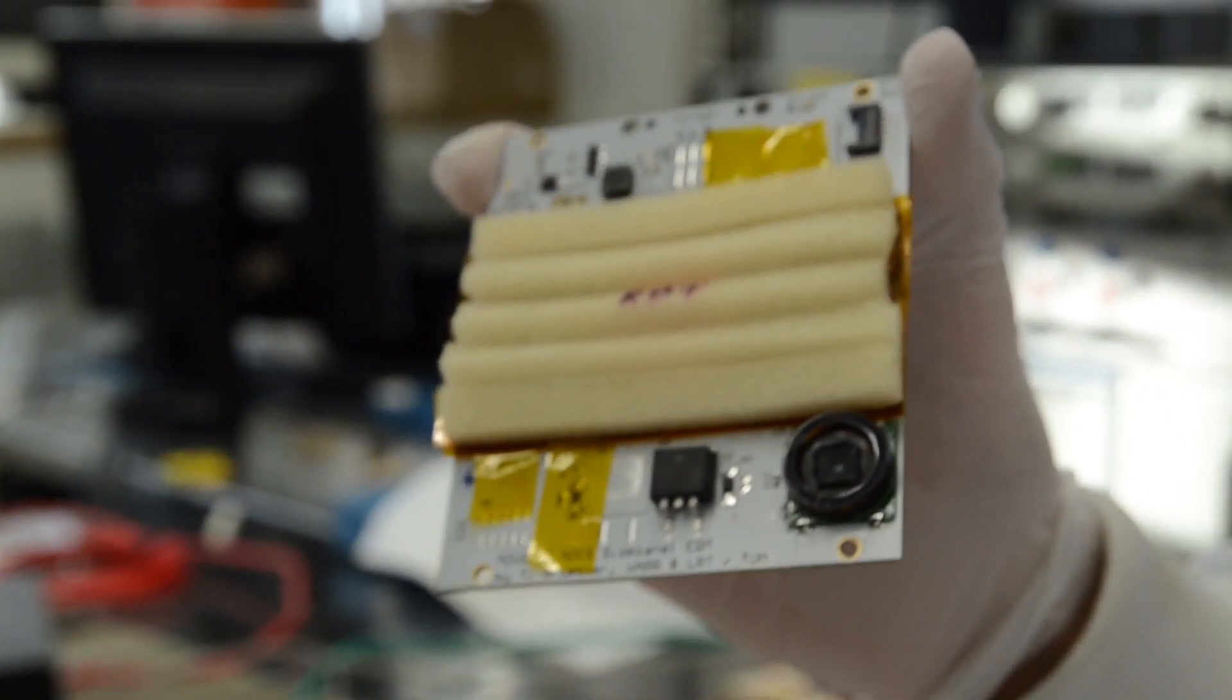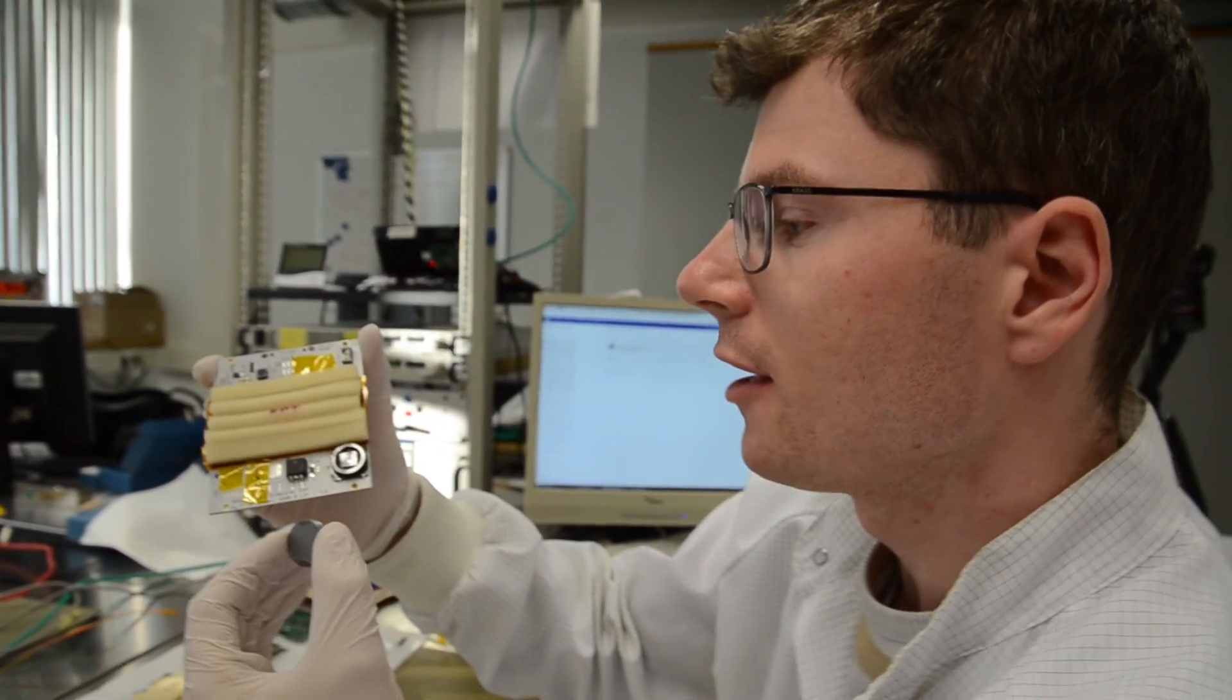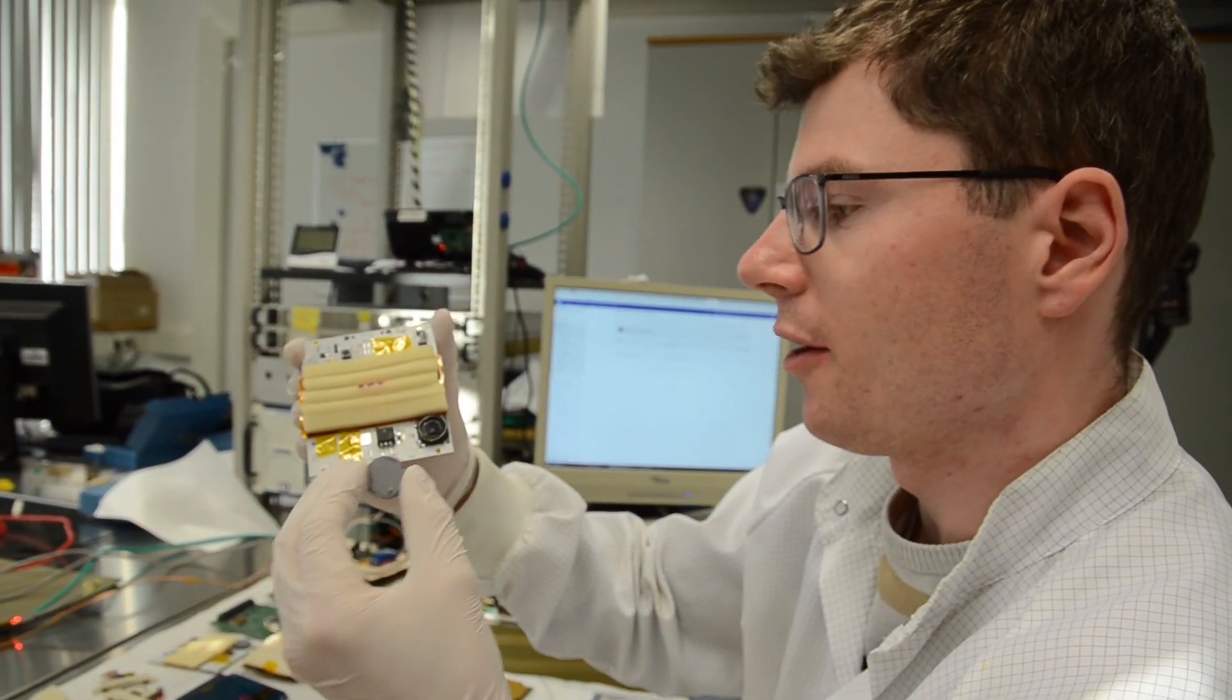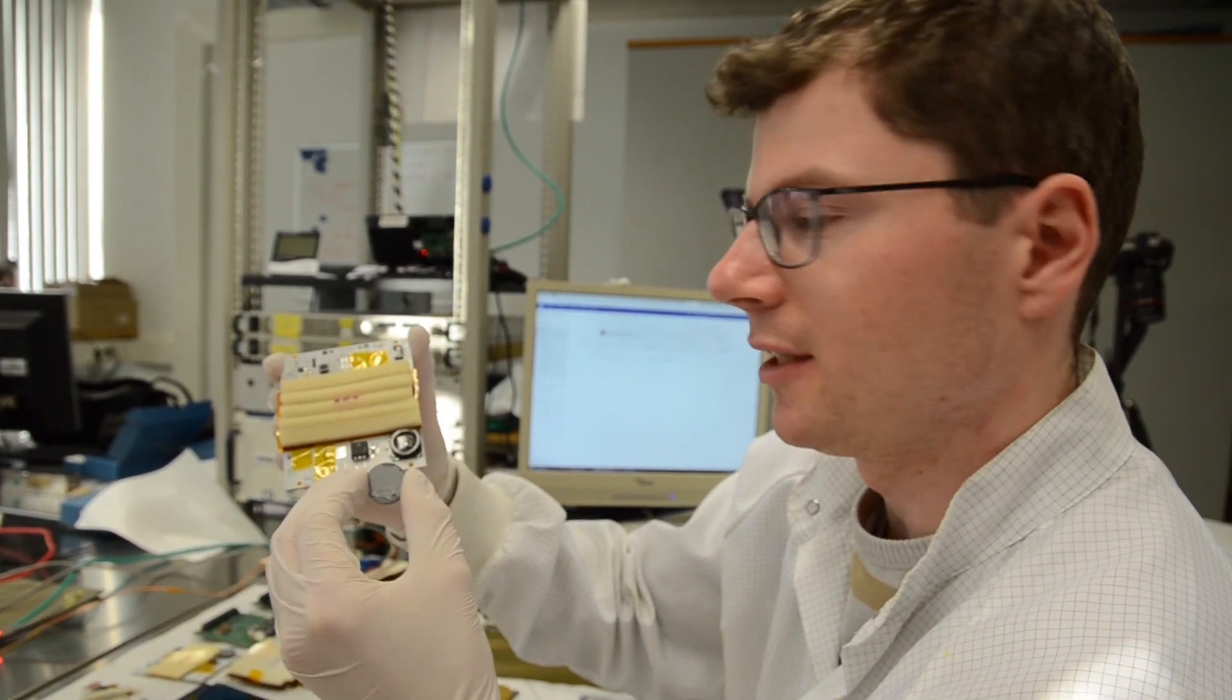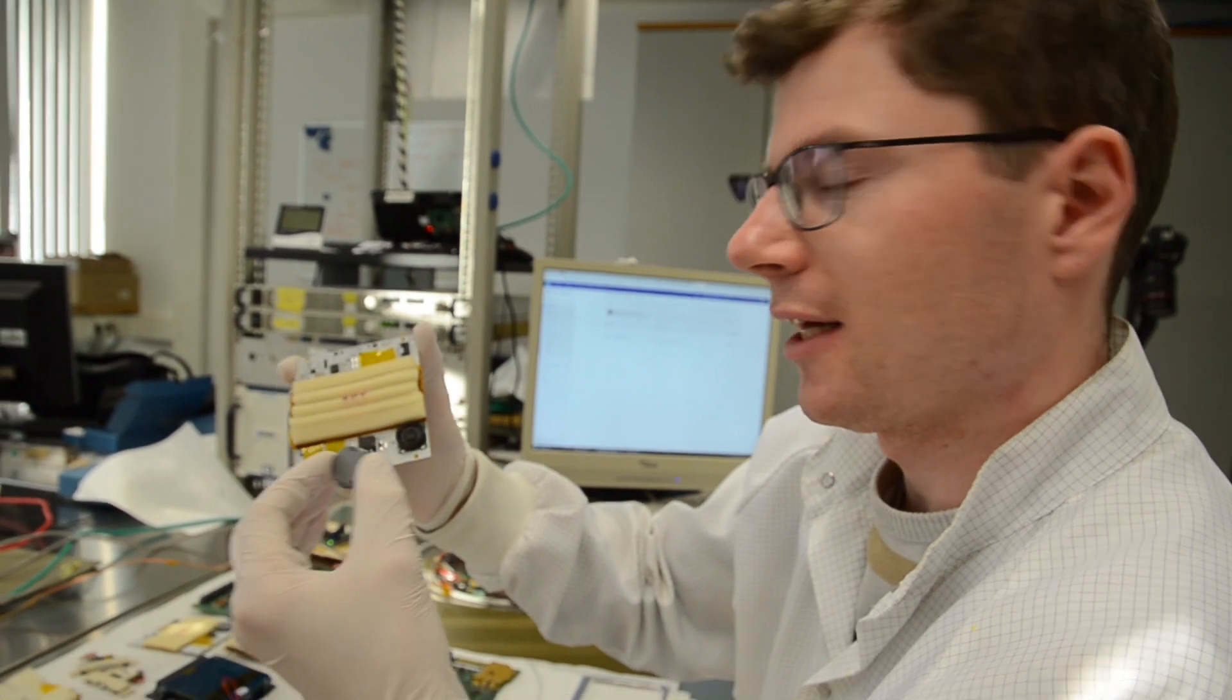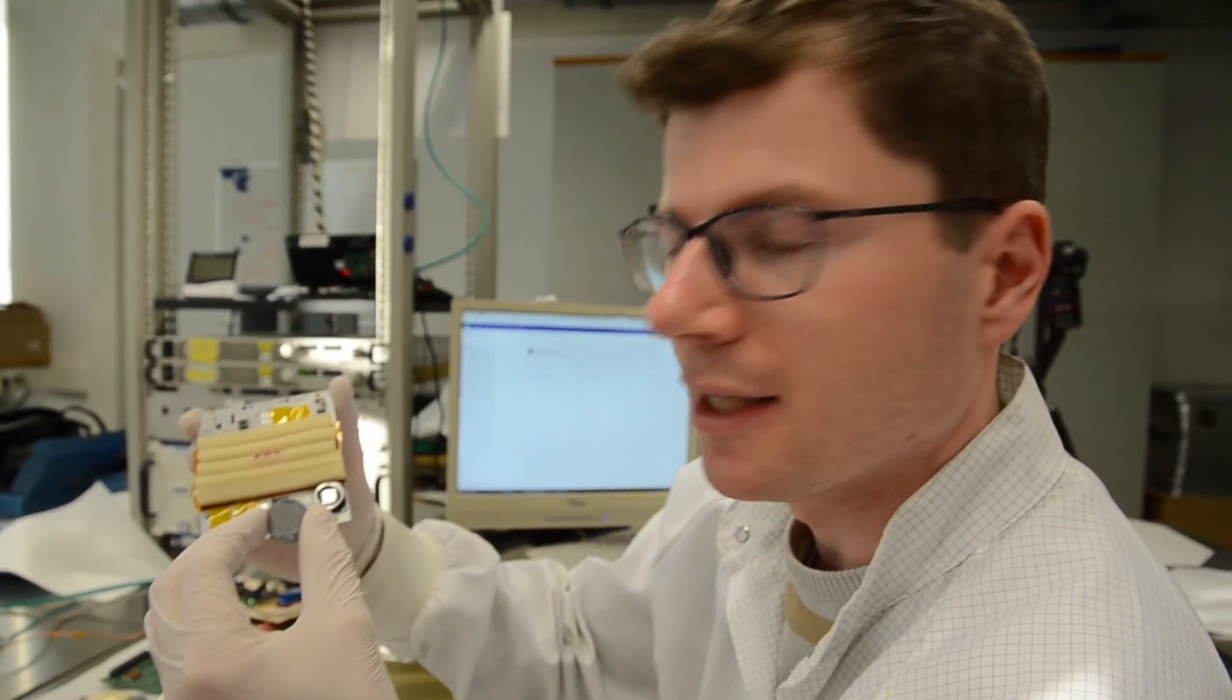We have one Sun sensor on every outward facing panel of the attitude control system, so pretty much in any direction we can sense where the Sun is and then calculate how to get to a Sun-pointed attitude.